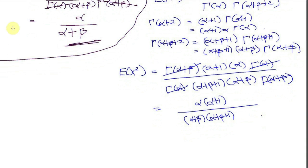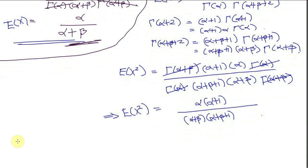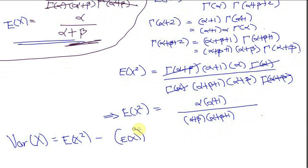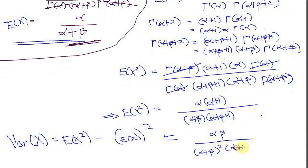This gives the second moment of a random variable x that is distributed beta. Using the first moment alpha divided by (alpha plus beta) and this second moment, the variance equals the second moment minus the square of the first moment. After a few lines of algebra, you get alpha times beta divided by (alpha plus beta) squared times (alpha plus beta plus 1), which is the variance of the random variable x.